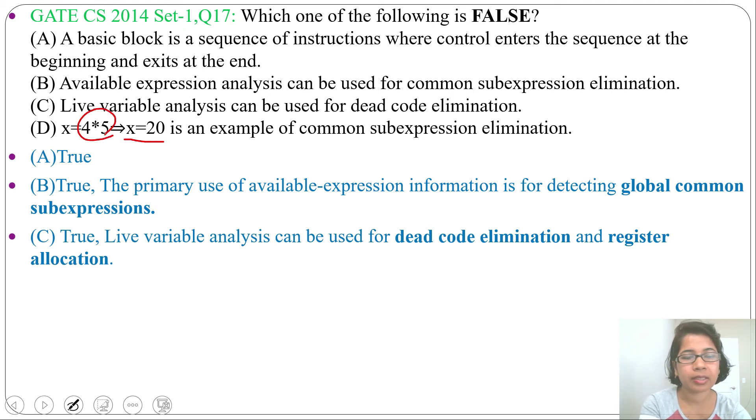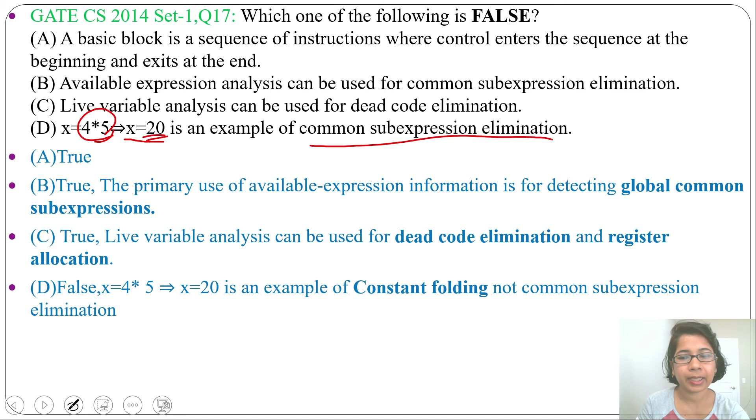We are folding this constant 4 * 5, we are folding this and writing as 20. This is an example of constant folding, not common subexpression elimination. So option D is false and it is asking which one of the following is false. Answer will be option D.